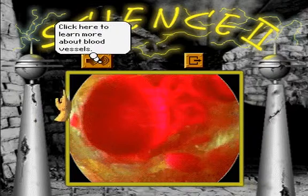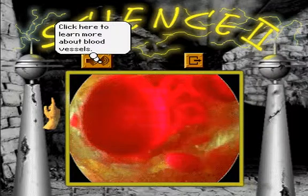Red blood cells float in a sea of straw-colored liquid called plasma. They're remarkable in their ability to be bumped, banged, and squished without getting hurt. Then again, it's easy to see why that's important — red blood cells get banged around quite a bit as they move through the body.